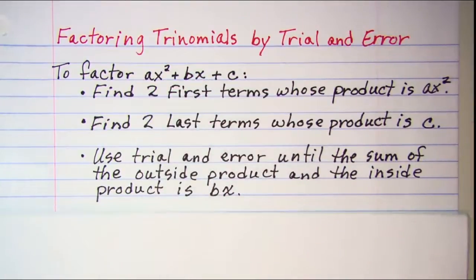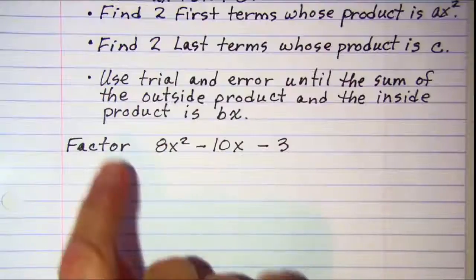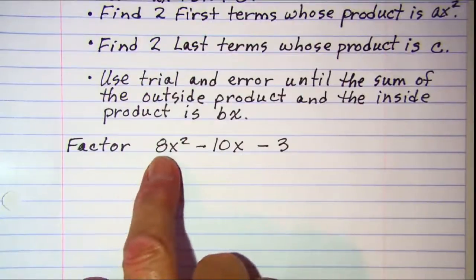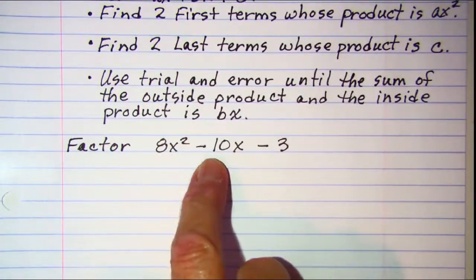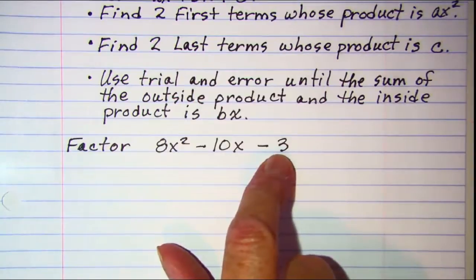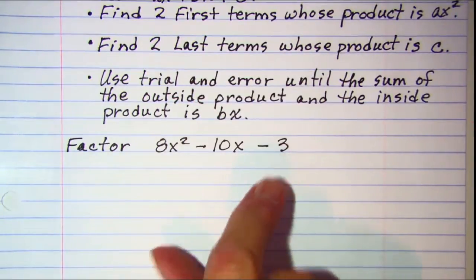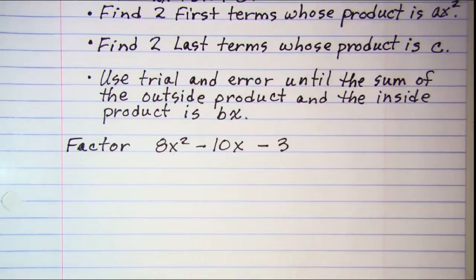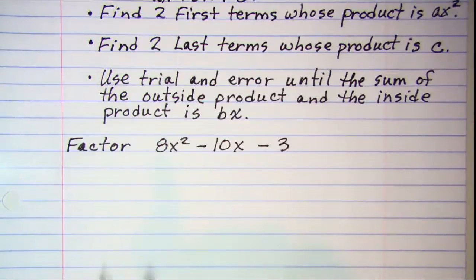Let's do a problem. We're asked to factor the trinomial 8x squared minus 10x minus 3. Factoring by trial and error is sometimes hard to explain your thought processes, but I'll try to think out loud and write down wherever I can my processes.